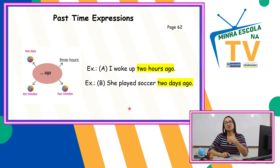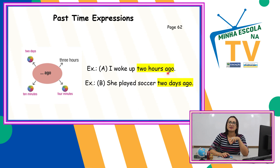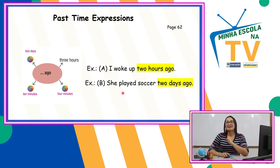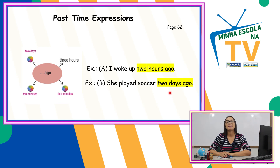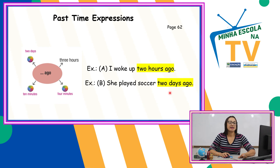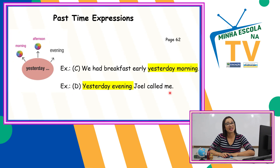Pode também usar outros: dois dias atrás, alguns minutos atrás. Esse 'ago' fica sempre no finalzinho. She played soccer two days ago — ela jogou futebol há dois dias atrás. É muito usada em inglês para indicar ações que aconteceram no passado. Próxima: Yesterday — aquela música dos Beatles. Significa 'ontem.' Ontem de manhã: yesterday morning. Ontem à tarde: yesterday afternoon. Ontem à noite: yesterday evening.